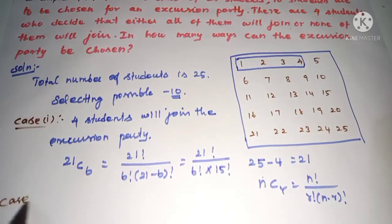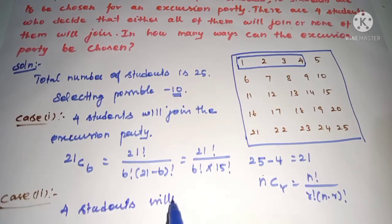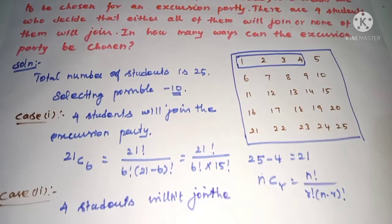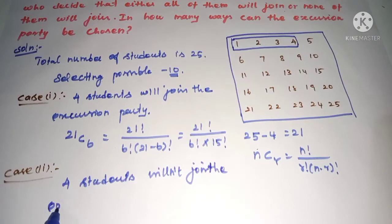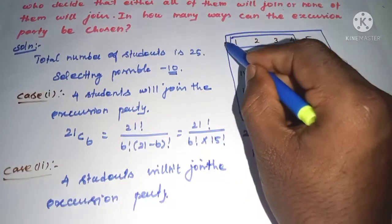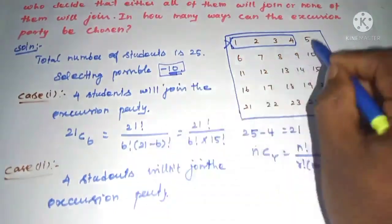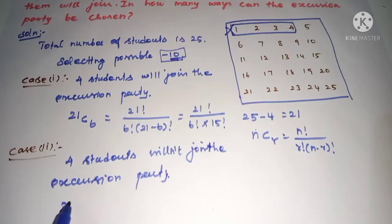Case 2: the four students will not join the excursion party. Since none of the four join, the party will be selected entirely from the remaining 21 students. We will select the total of 10 students from 21 students.